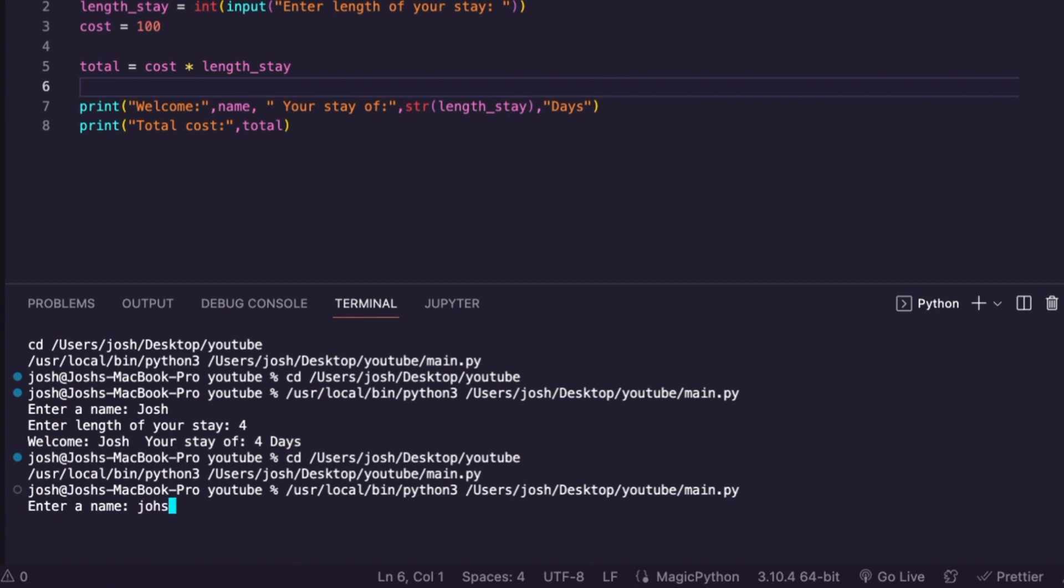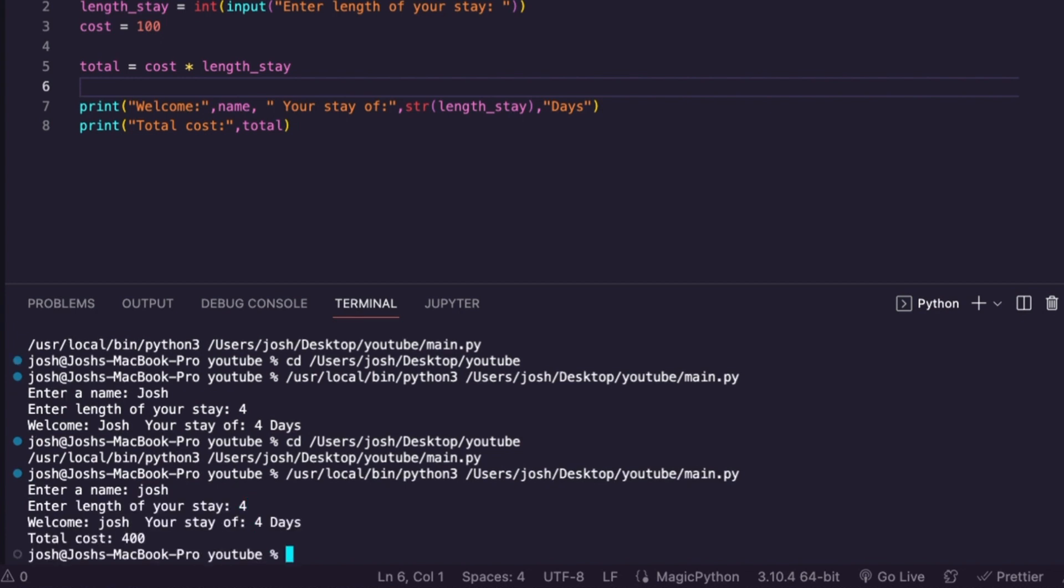This time, we can actually see our calculation results. So I can say, Josh, four. Okay. Total cost, 400. So in here, I've used one, two, three, four. I've used four of those five functions I've shown you, but see if you can use all five. Remember, len returns the length of something. That's the one I didn't use here.